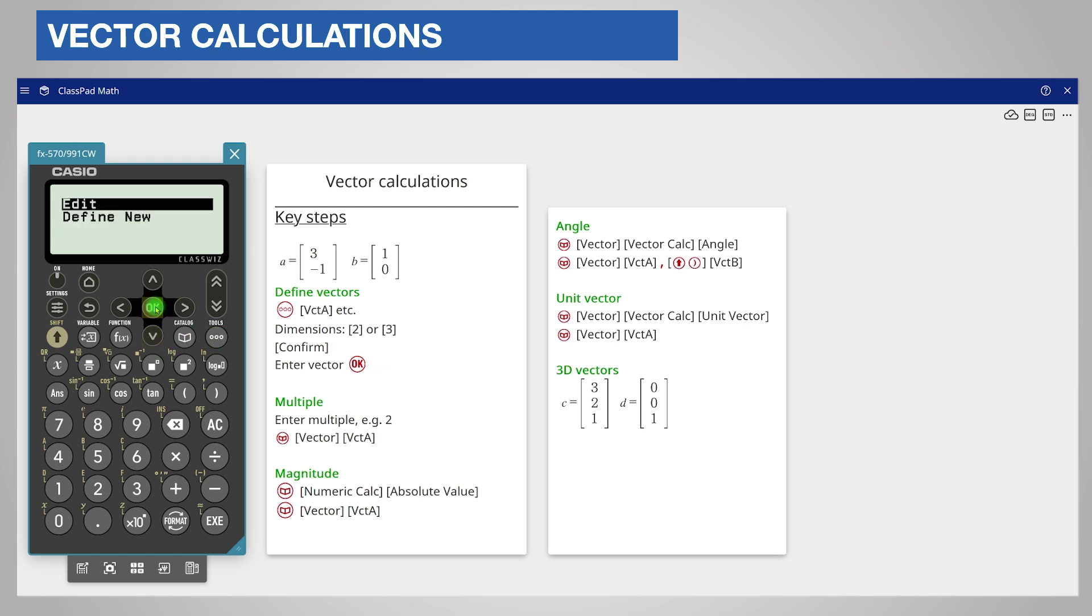I have already entered this in vector B. Now from the catalog menu choose vector and vector calculation. Scroll down and choose angle.